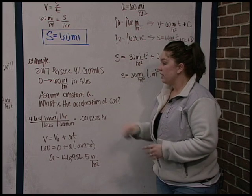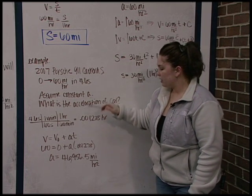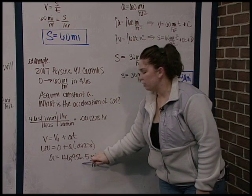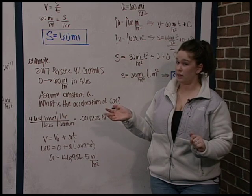So as you can see, even though this is really fast, this is an extremely large number where 60 is not. So maybe 60 miles per hour squared isn't as fast as we think it is.